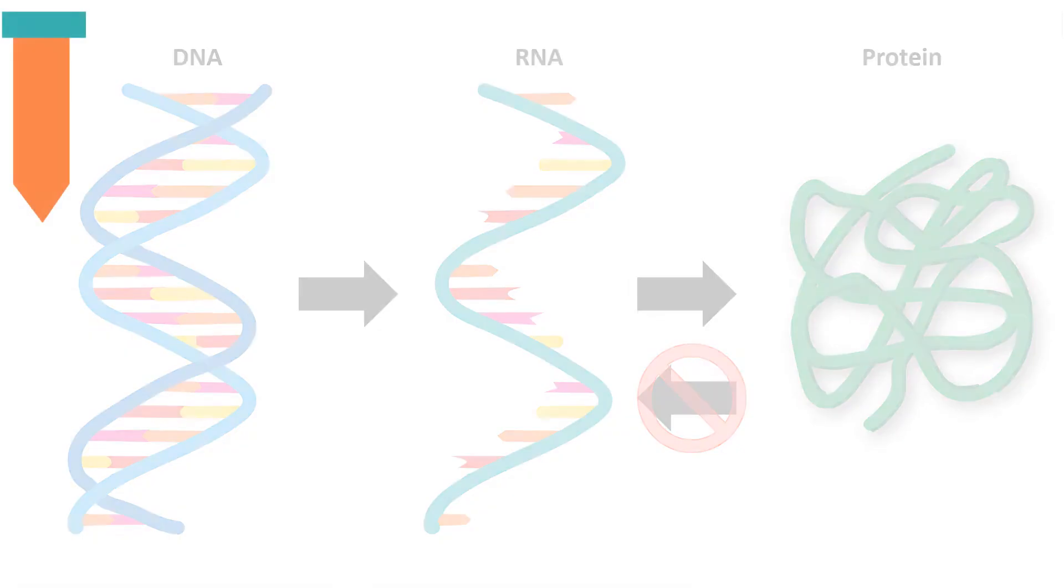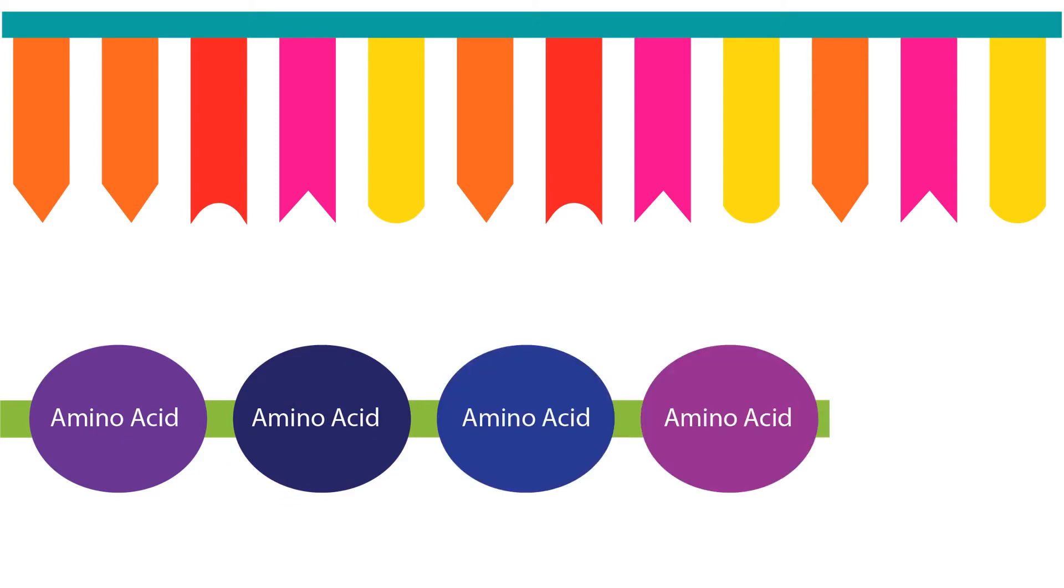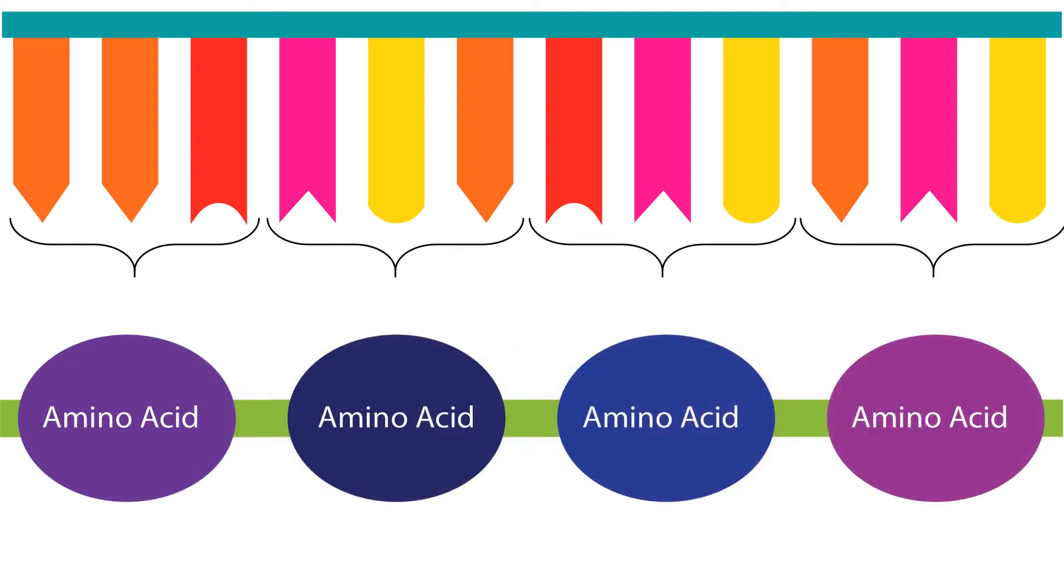Francis Crick had also proposed a sequence hypothesis, that the sequence of DNA bases determine the sequence of amino acids in a protein, based on a four-letter genetic code: G, C, A, and T, and 20 amino acids. He proposed that the code would be read in triplets, where each triplet coded for one amino acid.